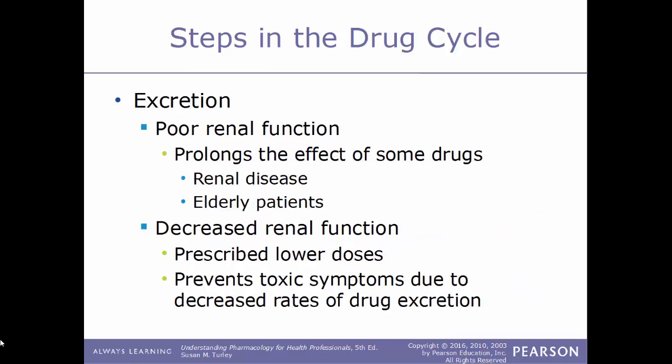Poor renal function has a major impact on drug excretion — if drugs are not eliminated from the body, they continue to be active until completely metabolized or excreted. For patients with renal disease or elderly patients, decreased renal function is a major concern when administering drugs, and lower doses must be prescribed to prevent toxic symptoms. A patient's overall health is a vital factor in determining dosage frequency and amount — a healthy 20-year-old would not receive the same dosage as an 85-year-old in poor health. That brings us to the end of chapter four in our pharmacology video series, and we will continue with chapter five.